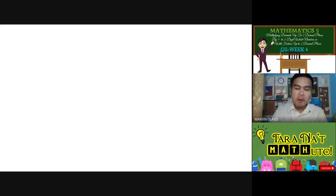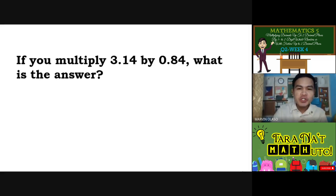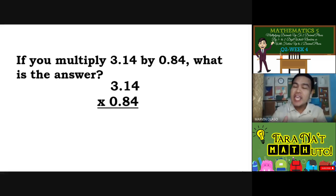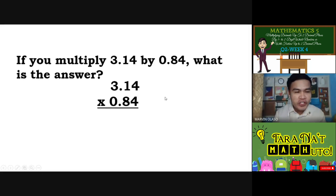Let's have the third example. If you multiply 3 and 14 hundredths by 84 hundredths, what is the answer? From the word multiply, we will use multiplication. This is an example of multiplying decimals by decimals — both up to 2 decimal places. Again, ignore first the decimal point. Parang ka nagmumultiply lang ng 314 times 84.